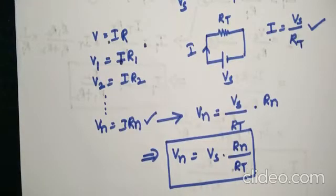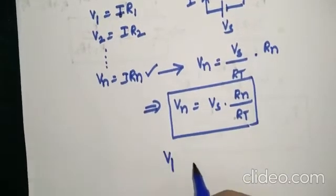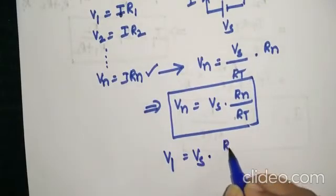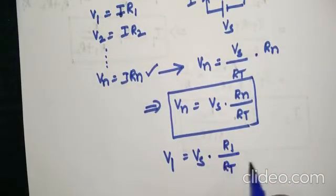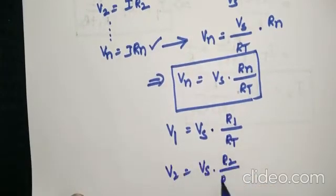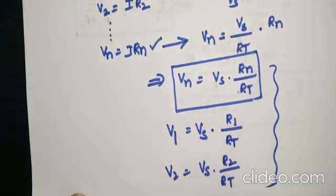If I want to calculate V1, it will be Vs into R1 by Rt. If I want to calculate V2, then it will be Vs into R2 by Rt. Here you can observe you are not using any current. Without current, you can actually find the voltages at any element using voltage division rule.